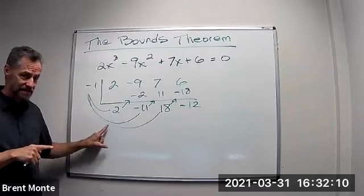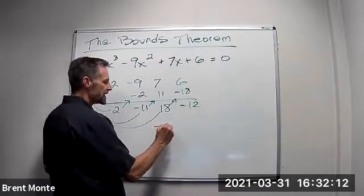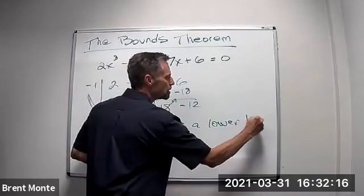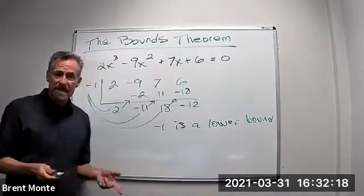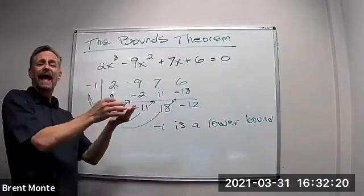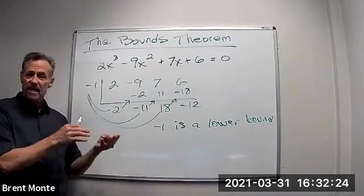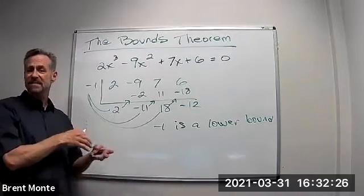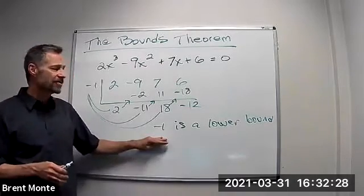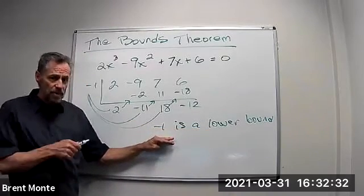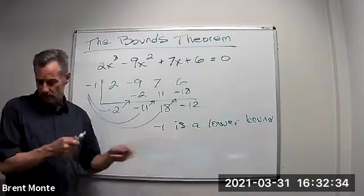So since I used a negative and the alternating signs down here, negative one is a lower bound. And what does that mean? That means I can't have a root lower than negative one. So I don't have to check negative two, negative three, negative six, any numbers lower than negative one. This rule tells me any root can't be less than negative one. Let's try another one.